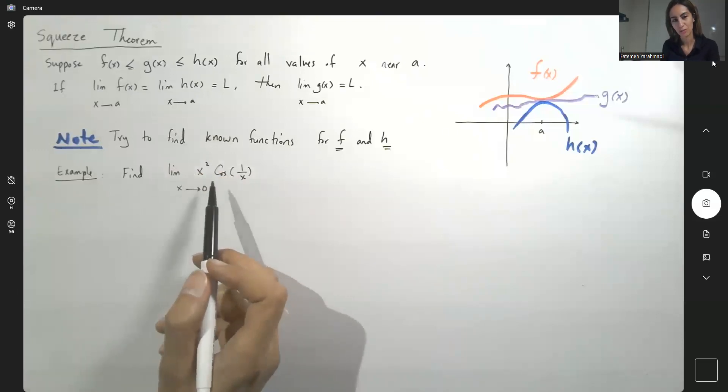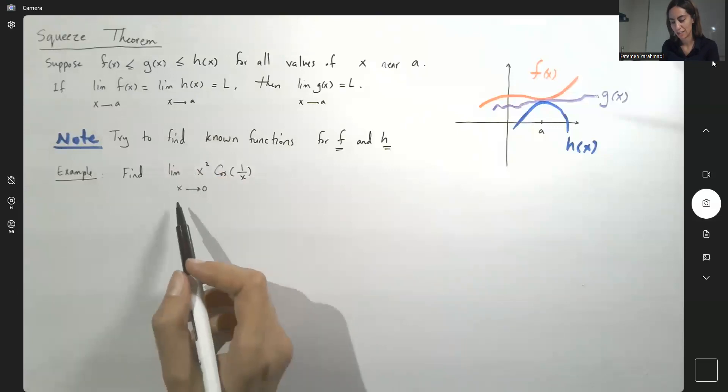For example, suppose I ask you to find the limit of x squared cosine of 1 over x as x approaches 0.